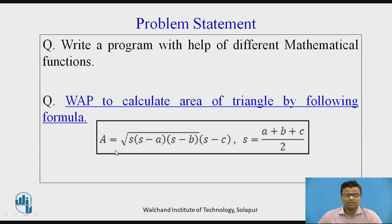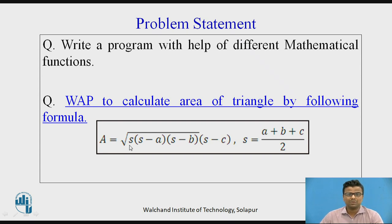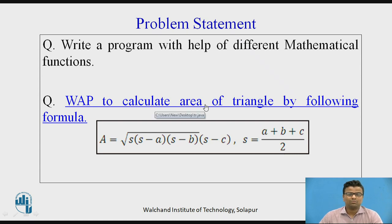Where S is the semi-perimeter and capital A is the area of the triangle we have to calculate. First, we have to calculate the semi-perimeter of the triangle with the formula S is equal to A plus B plus C divided by 2. Now we will go to the particular program for the area of the triangle.